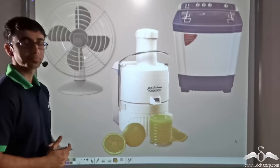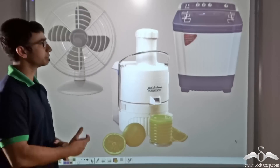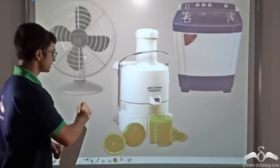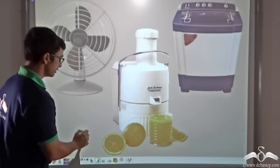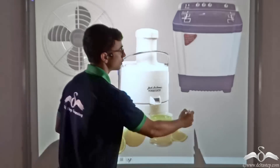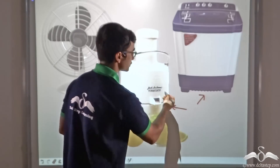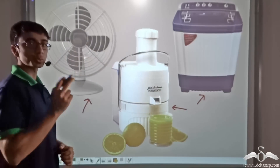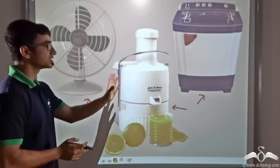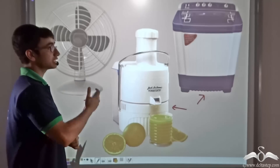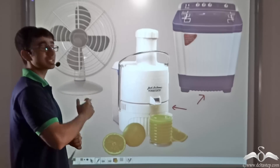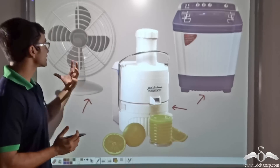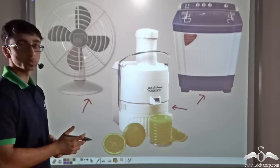On the screen you will find pictures of certain regular appliances — a table fan, a washing machine, and a juicer. Now there is one common aspect in all these three appliances even though their functions might be completely different. The common aspect is that they have a certain part which rotates.